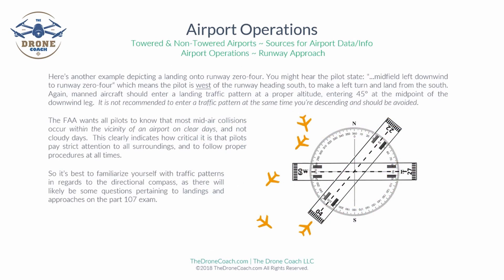Here's another example depicting a landing onto runway 04. You might hear the pilot state: 'midfield left downwind to runway 04.' Again, that would mean the pilot is west of the runway, as you can see in the graph, heading south. Remember, they enter at a 45-degree angle at the midpoint of the downwind leg.